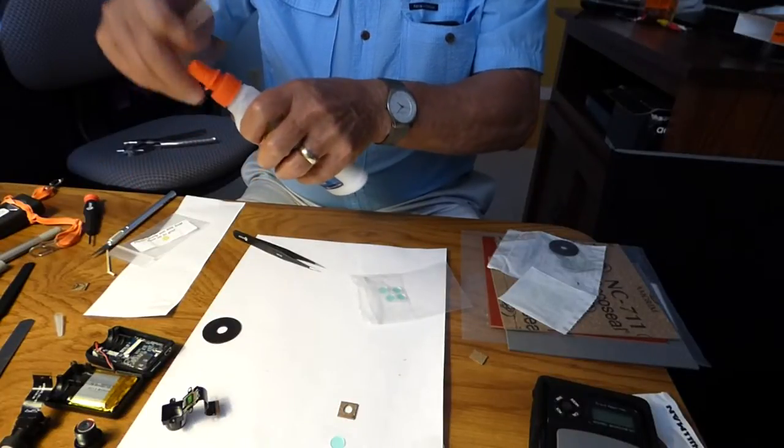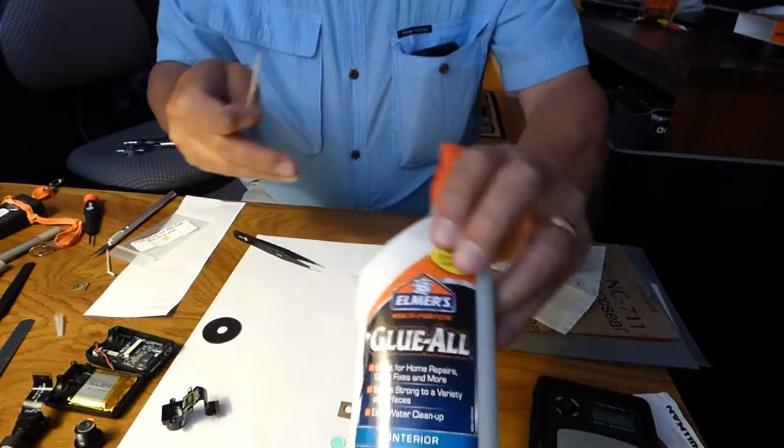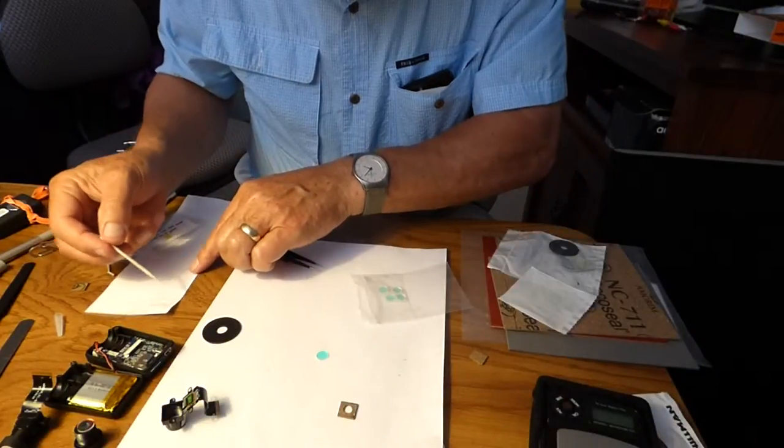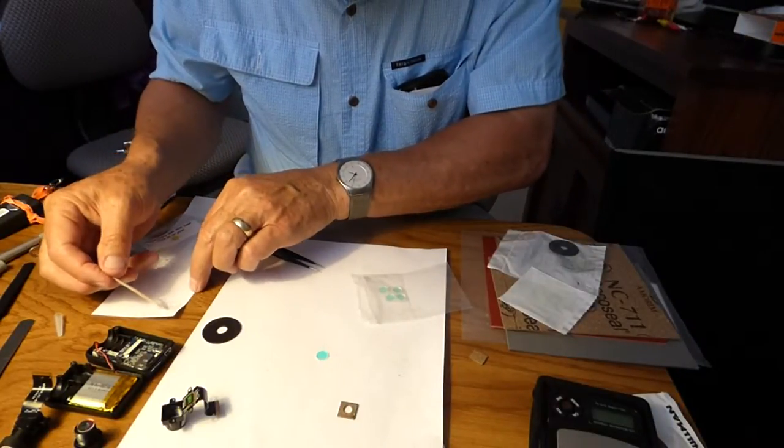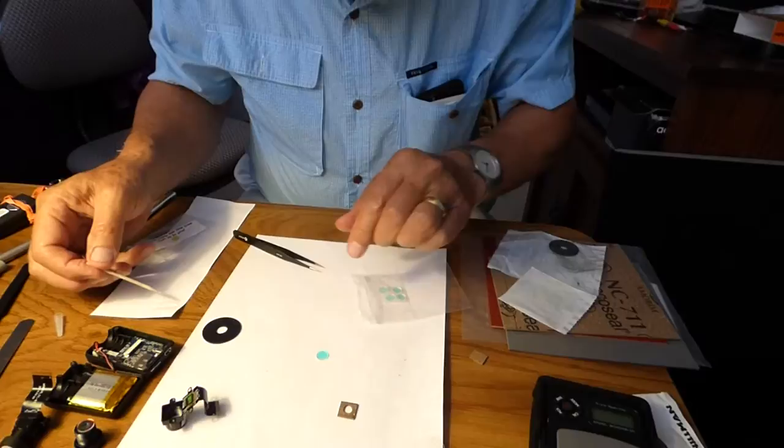We'll see about using some of this just plain Elmer's glue to secure the IR cut filter to this little cork mount.